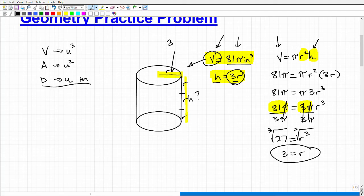And my height is going to be 3 times our radius. So 3 times 3 would be 9 inches. And there is the solution.